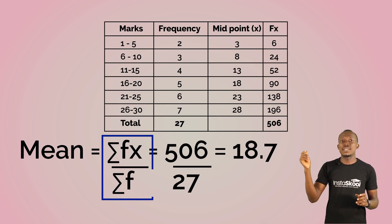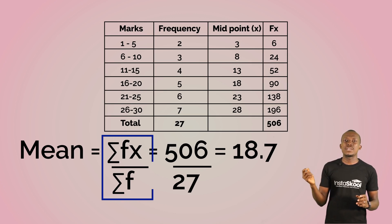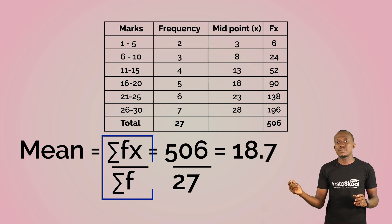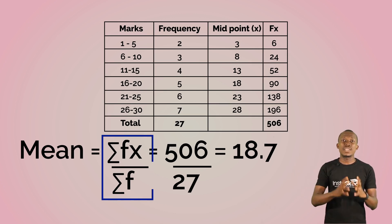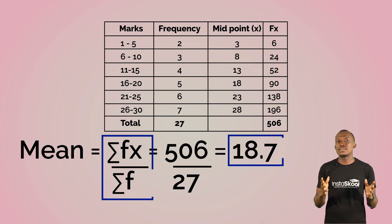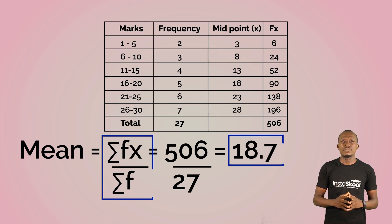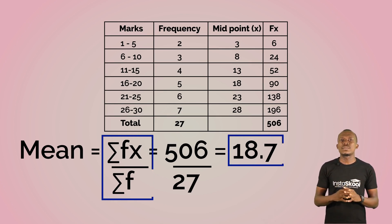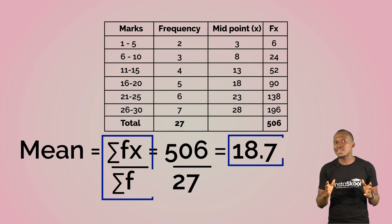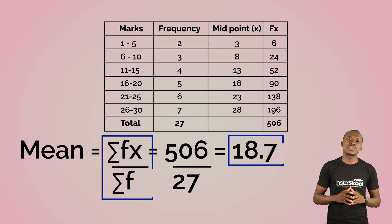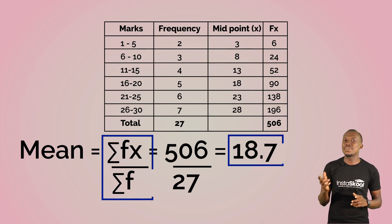That's 506 divided by 27, so our final answer is 18.7. Well done! Our next measure of dispersion is the median.